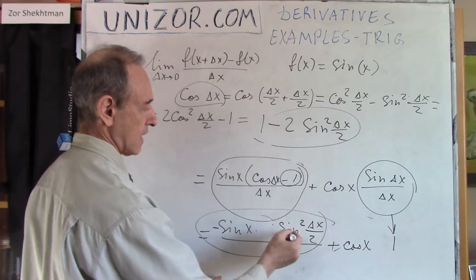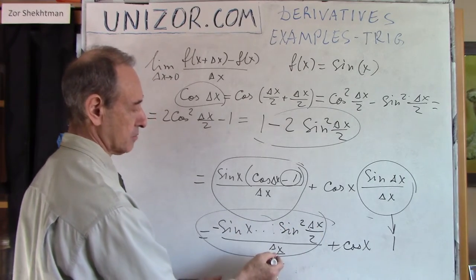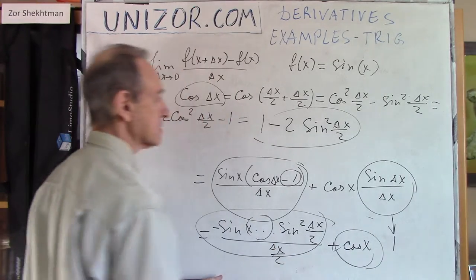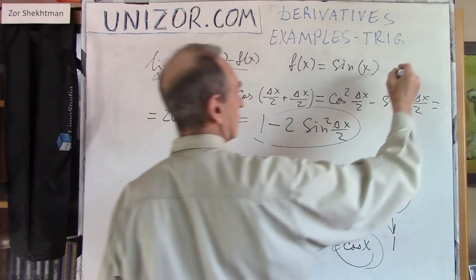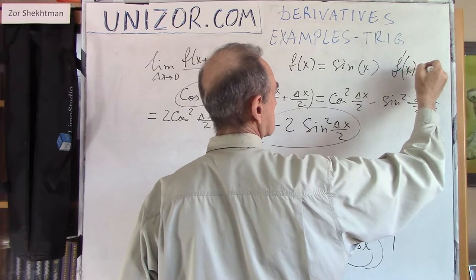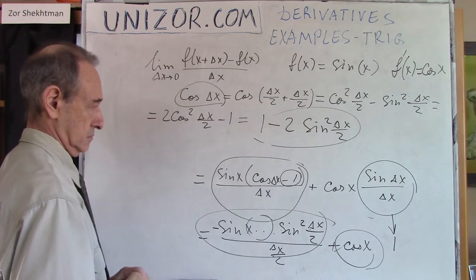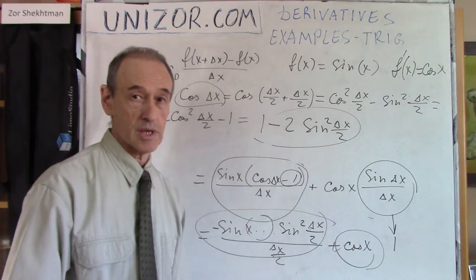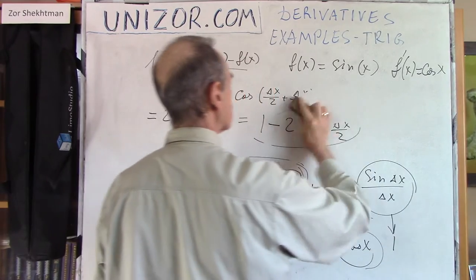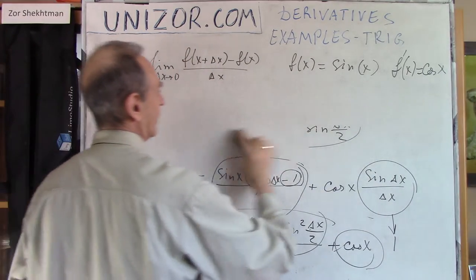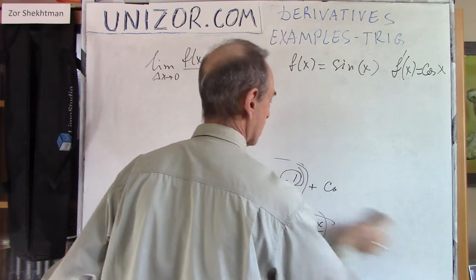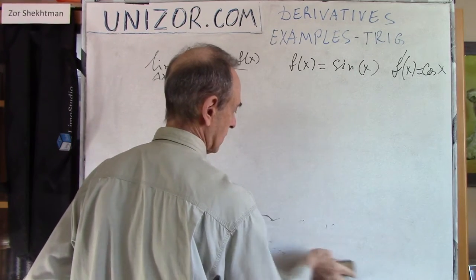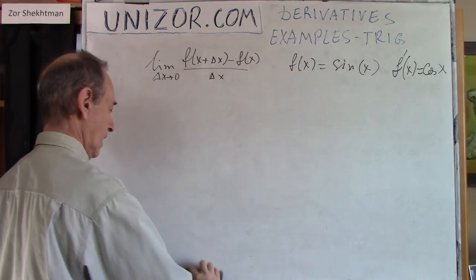Because one of these two sines divided by delta x will go to one and another one would be zero in limit. So the only thing which remains is cosine. So f prime of x is equal to cosine x. The derivative of sine is cosine. Something which, it's quite interesting actually, that trigonometric functions are related to each other in this particular way. It's kind of unusual, at least for me.